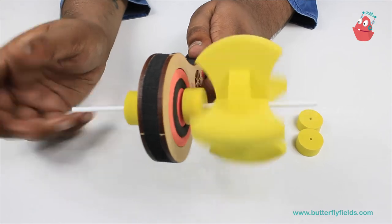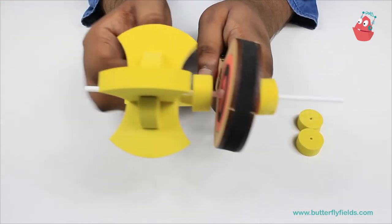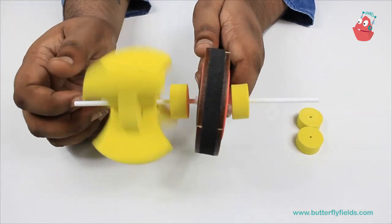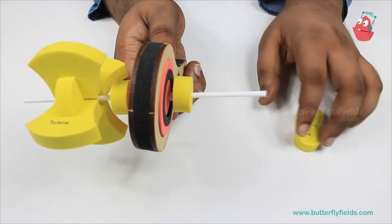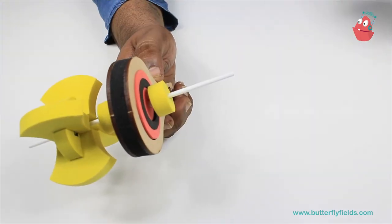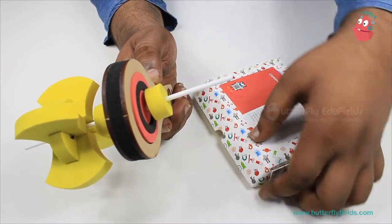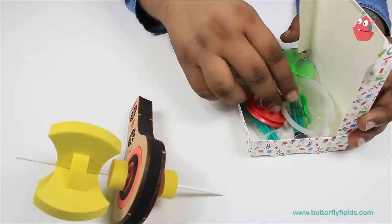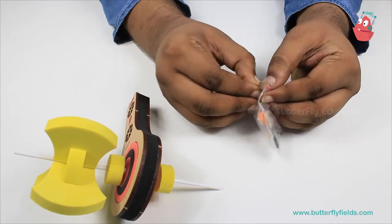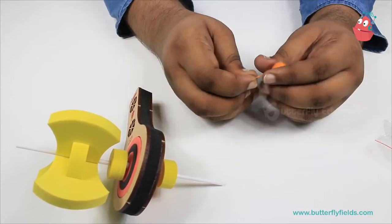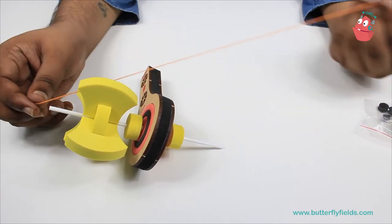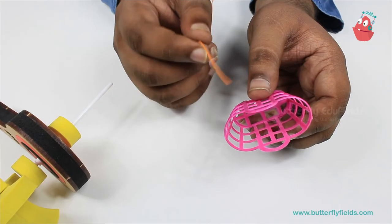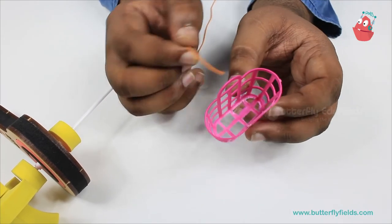Now to make it work, we need to tie a basket with the help of a thread at this end. For that, you can get the thread from this box. Take out approximately 30 centimeters of thread. To one end of the thread, you can tie this basket.